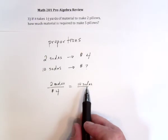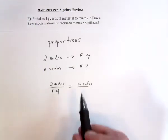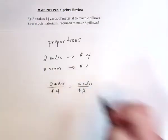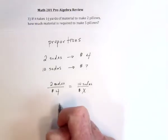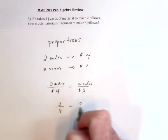If two of them cost four dollars, ten of them will cost x dollars. Or if I take the words away and simplify it, it's just two over four equals ten over x.